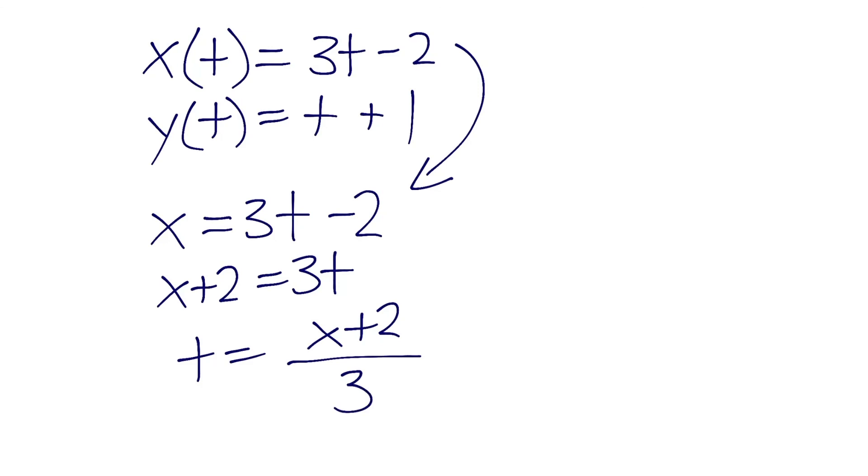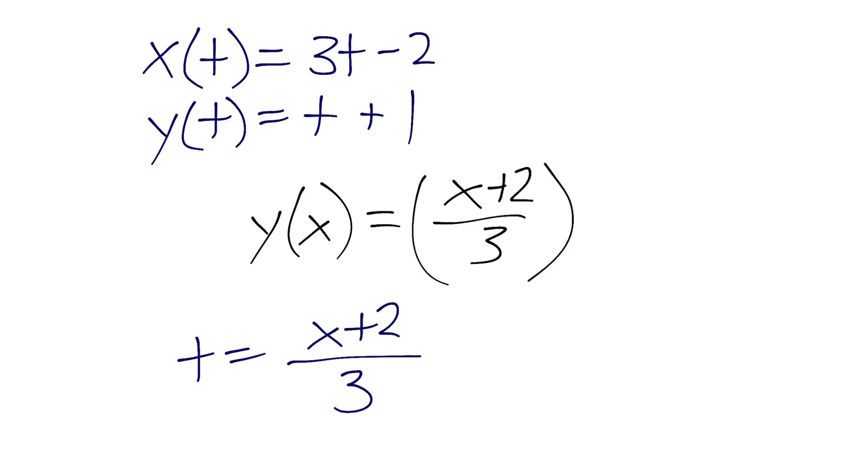All right, so now we have our value of t, and to get our equation with y in terms of x, we just have to substitute this t value right into that equation, and we'll have our answer. Okay, so now we can just do y is equal to, and we'll do our y at x notation actually, y is equal to, plugging in x plus 2 over 3 for t, and then just adding plus 1.